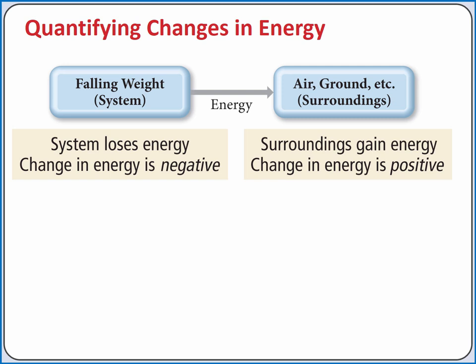We're going to discuss changes in energy for a process in terms of a system, which is something we'd like to study, and the surroundings, which is everything else in the universe. Since energy cannot be created or destroyed, if our system increases in energy, that energy had to come from the surroundings. So if a process causes energy to be transferred from the surroundings to the system, we'll consider it a positive change in energy.